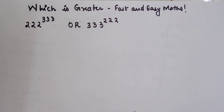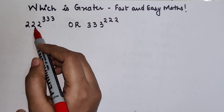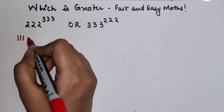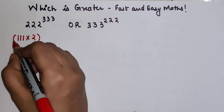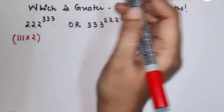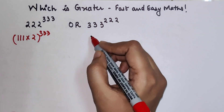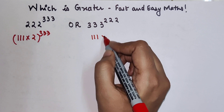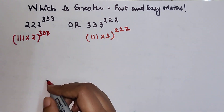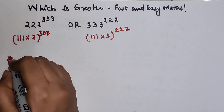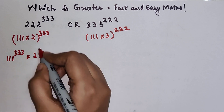What we can do here is: 222 can be written as 111 into 2, the whole raised to 333. And 333 can also be written as 111 into 3, raised to 222. So I can write the first as 111 raised to 333 into 2 raised to 333.